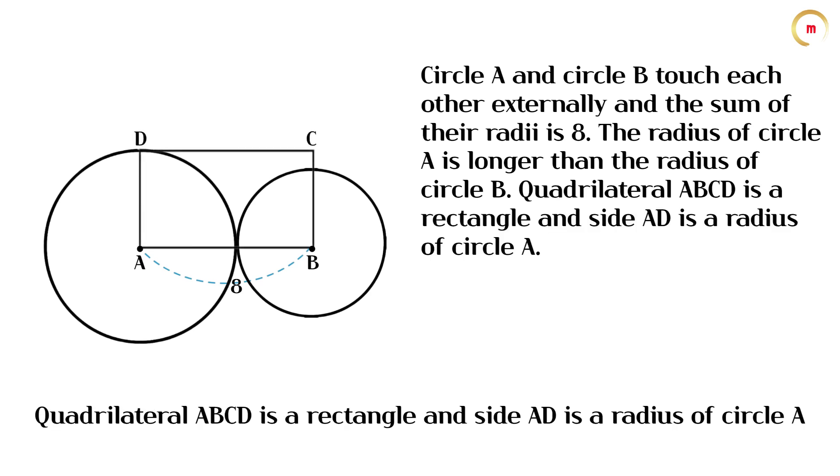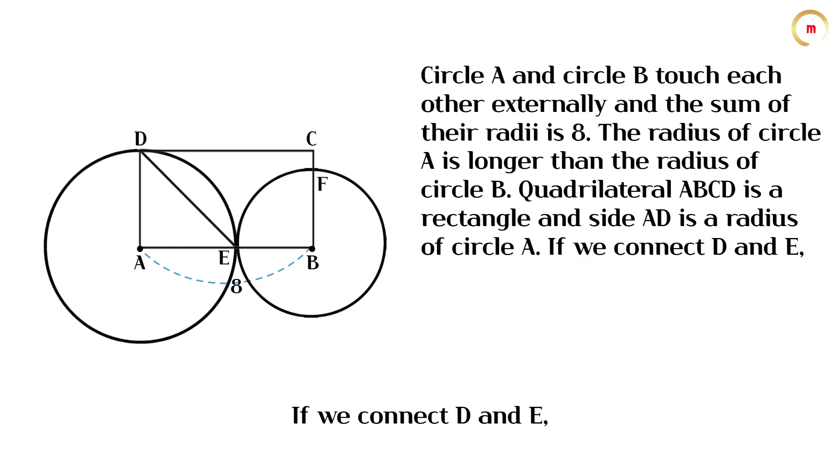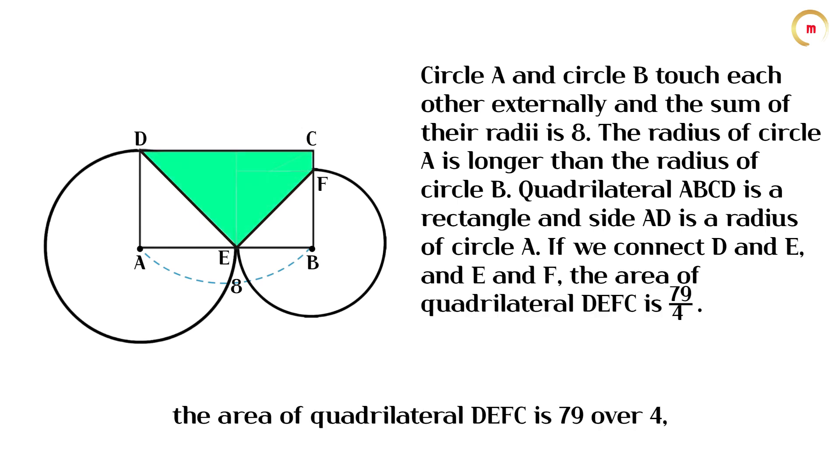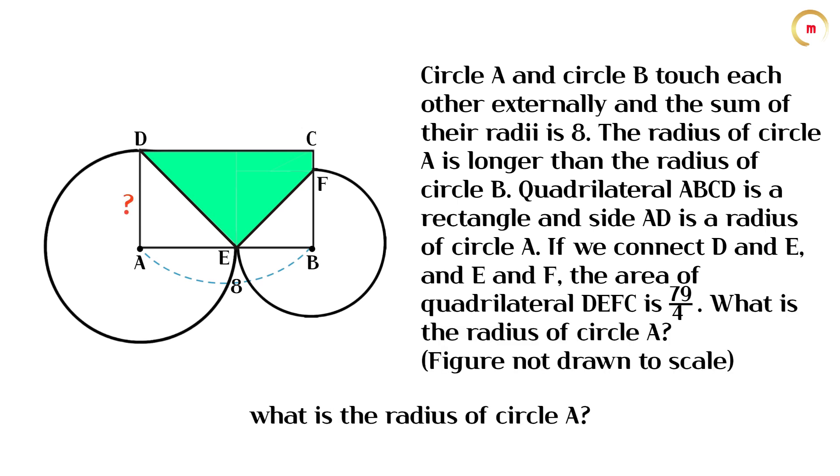Quadrilateral ABCD is a rectangle, and side AD is a radius of circle A. If we connect D and E, and E and F, the area of quadrilateral DEFC is 79 over 4. What is the radius of circle A?